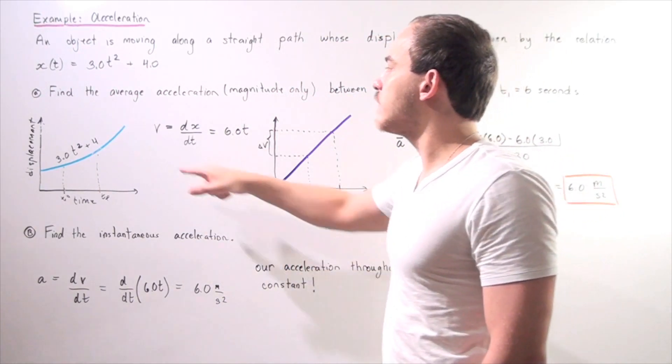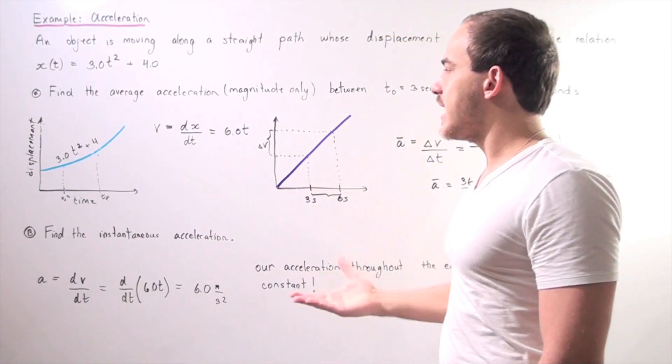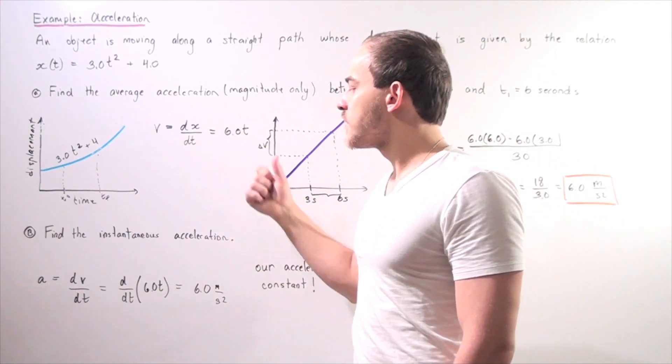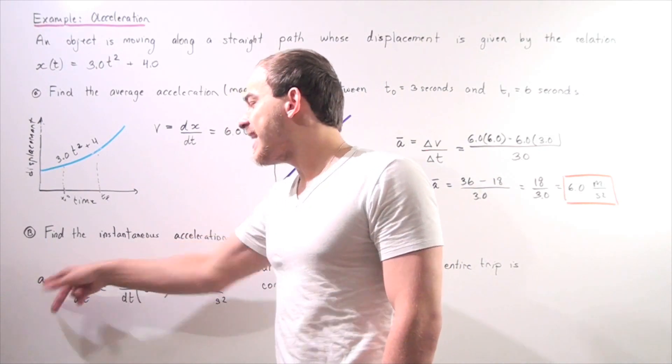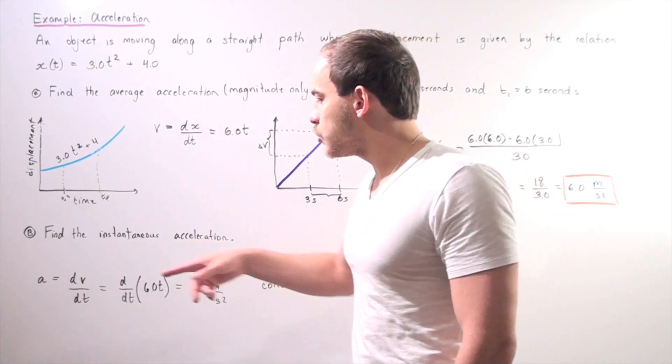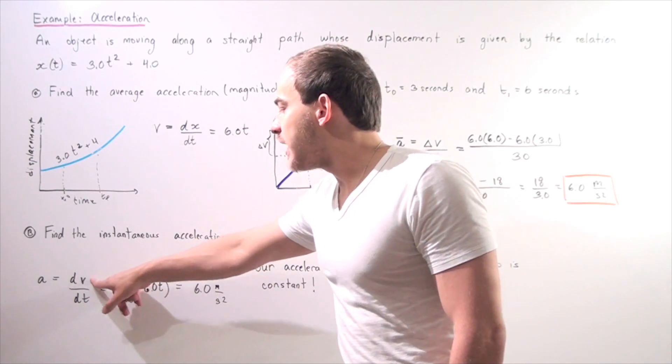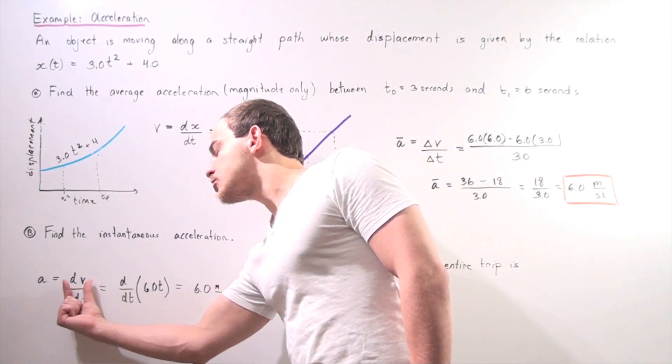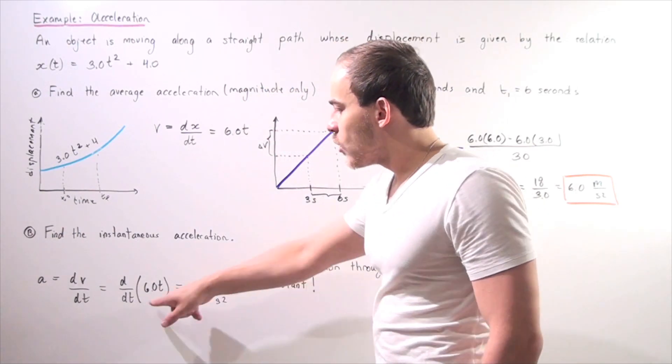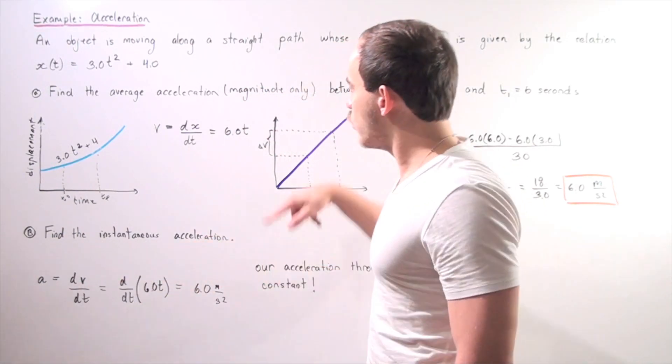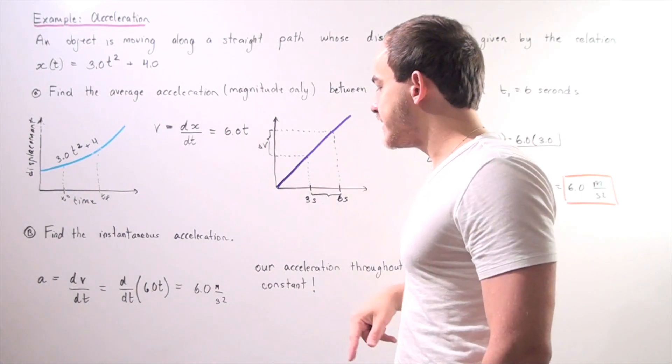So since we already found our velocity function, let's take that. Let's take the first derivative of our velocity function. So the formula is instantaneous acceleration equals dv/dt. So infinitely small change in v divided by infinitely small change in t equals, we simply replace the velocity with our 6.0t.